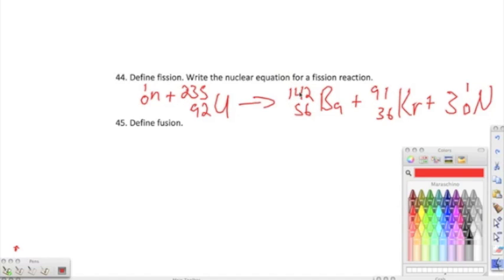Define fusion. Fission, number 45, it says, the definition is combining two light nuclei to form a heavy, more stable nucleus. Main difference between fission and fusion. Fission, we're breaking apart a very large atom. Fusion, we're combining two light nuclei, very light, very low mass numbers to form a more stable one.